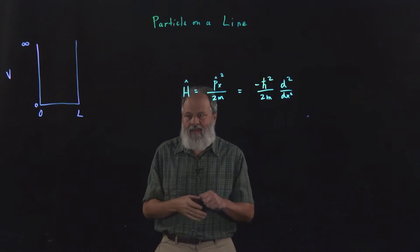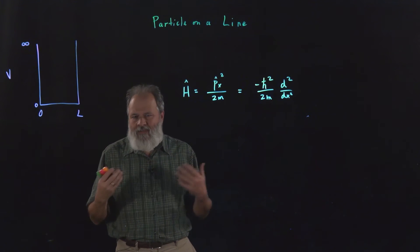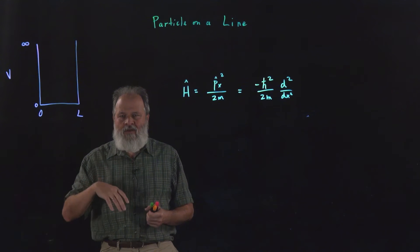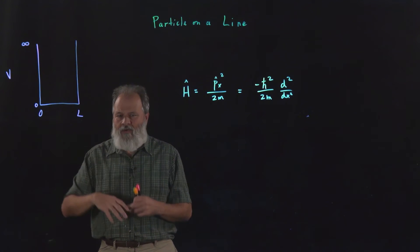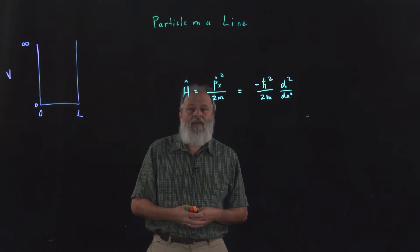However, we don't know exactly yet what the probability distribution is. Is it a more or less uniform distribution? Is it more likely at the sides or more likely in the middle or whatever?